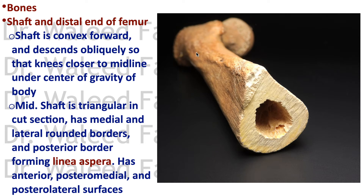This obliquity is around seven degrees in the coronal plane, so the knees are closer to midline than the hips. The middle of the shaft is triangular in cross-section. The posterior border forms the linea aspera with its medial lip and lateral lip. It also has medial and lateral rounded borders. This is the left femur — this is the posterior aspect and this is the anterior aspect.